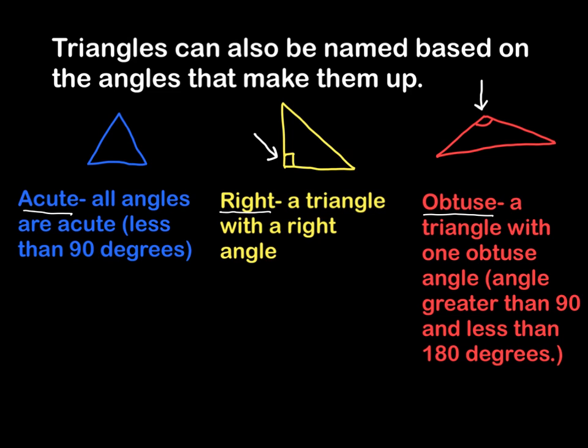Now in an acute triangle, it means all angles are acute. If you're unfamiliar with the term acute, that means that all the angles or the angle is less than 90 degrees. Which you can see here, so it's less than 90 degrees.